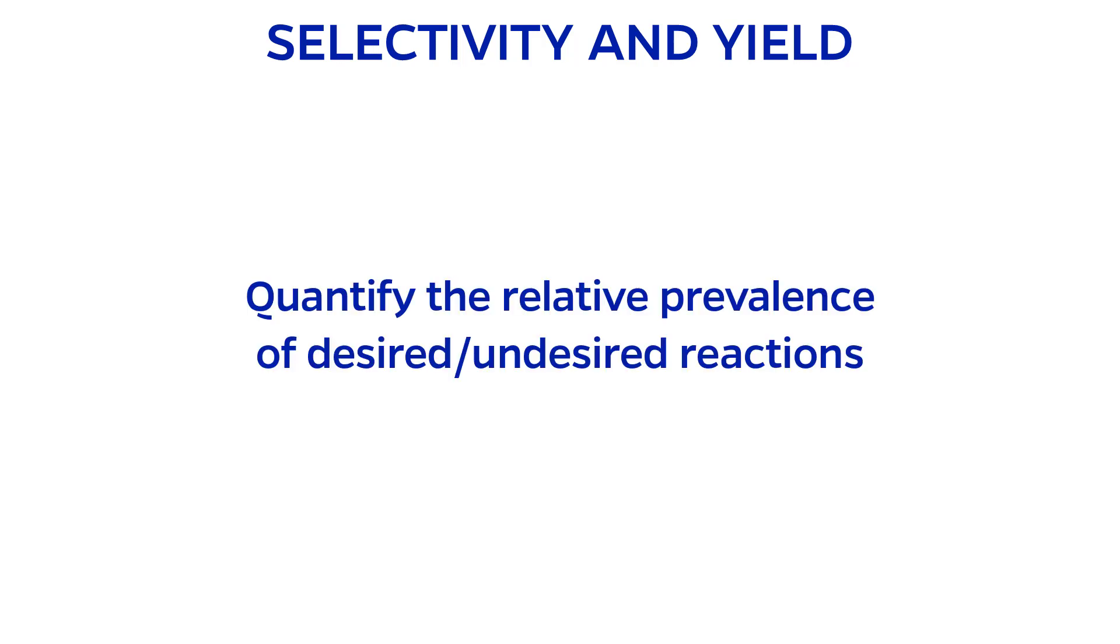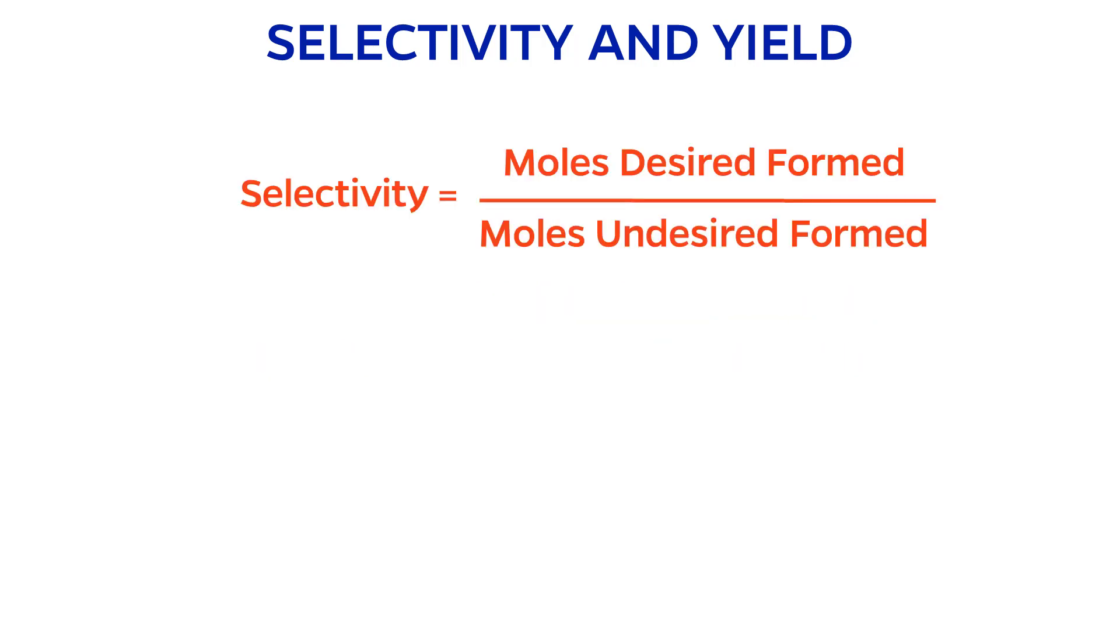Selectivity and yield. The specifications of selectivity and yield describe the relative prevalence of the desired and undesired reactions. Selectivity is defined for a pair of products. It is simply the moles of desired product formed divided by the moles of undesired product formed.